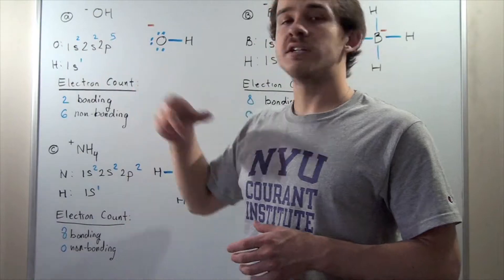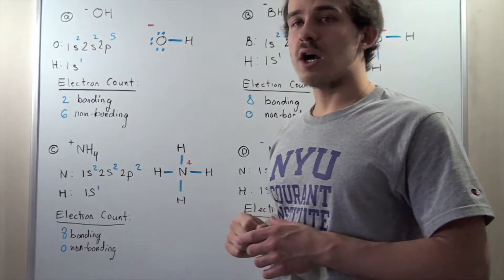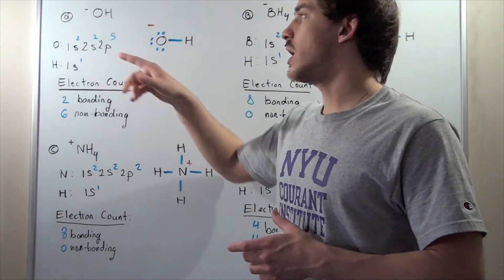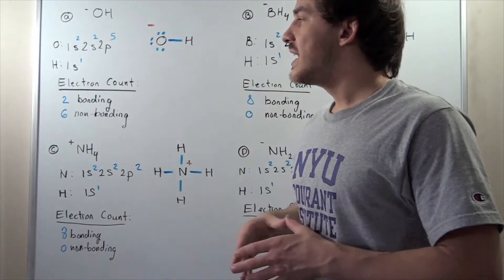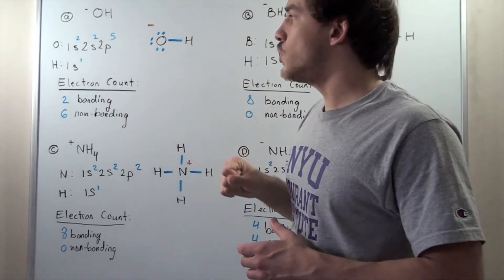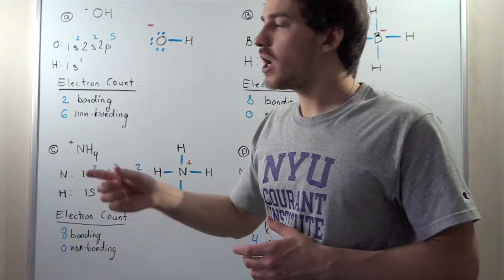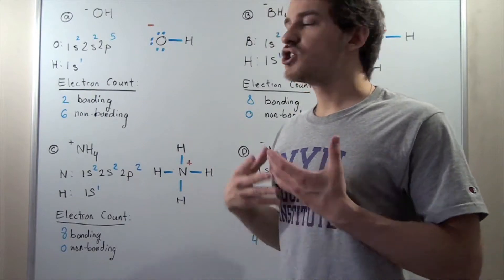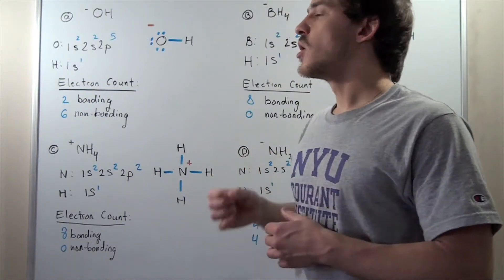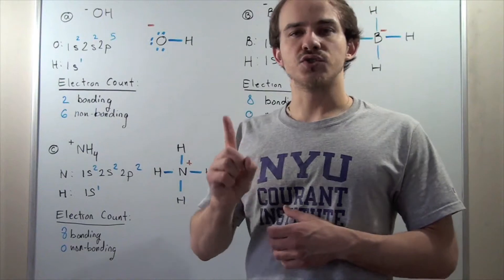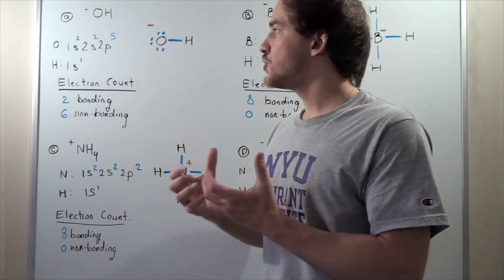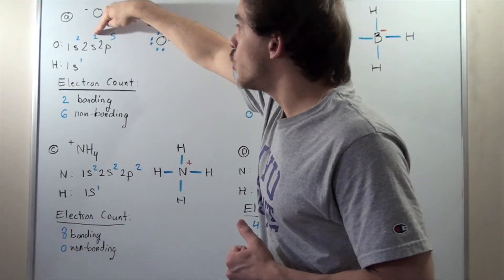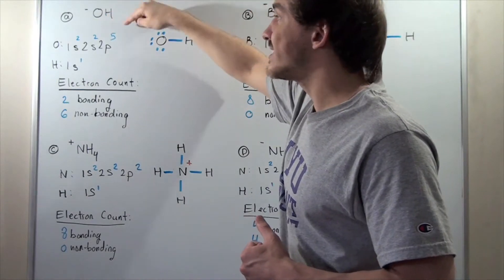Let's draw our electron configuration for oxygen. Two electrons go into the 1s, two electrons go into the 2s, and five electrons go into the 2p. H stays the same because H is neutral, so we place one electron into the 1s orbital. Now let's count the total amount of valence electrons. Remember, valence electrons are those found in the outermost energy shell — for oxygen, that's the n=2 shell. So 2 plus 5 equals 7 valence electrons for O.